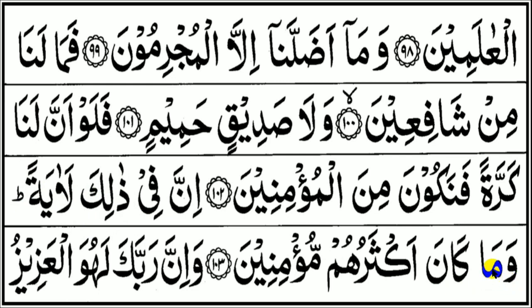Wamaa kaana aksaruhum mu'minin. Wamaa kaana aksaruhum mu'minin. Aksaruhum: hamzah, keluar angin sedikit. Kemudian mim sukun bertemu dengan huruf mim — huruf yang sama — disebut idgham mimi, sekaligus digunakan karena yang berharakat tasdid adalah huruf mim, dipanjangkan dua ketukan. Aksaruhum mu'minin.